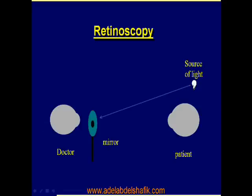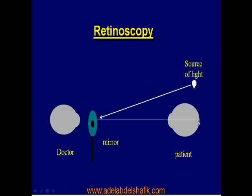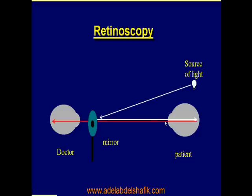Light comes from the source to the mirror and is reflected back to the patient's eye. The light will pass through the different media of the eye, reaching the choroid. As the choroid is full of blood, it will reflect light back, and this light will be red in color. The doctor will receive the light through the hole and will see the red reflex.